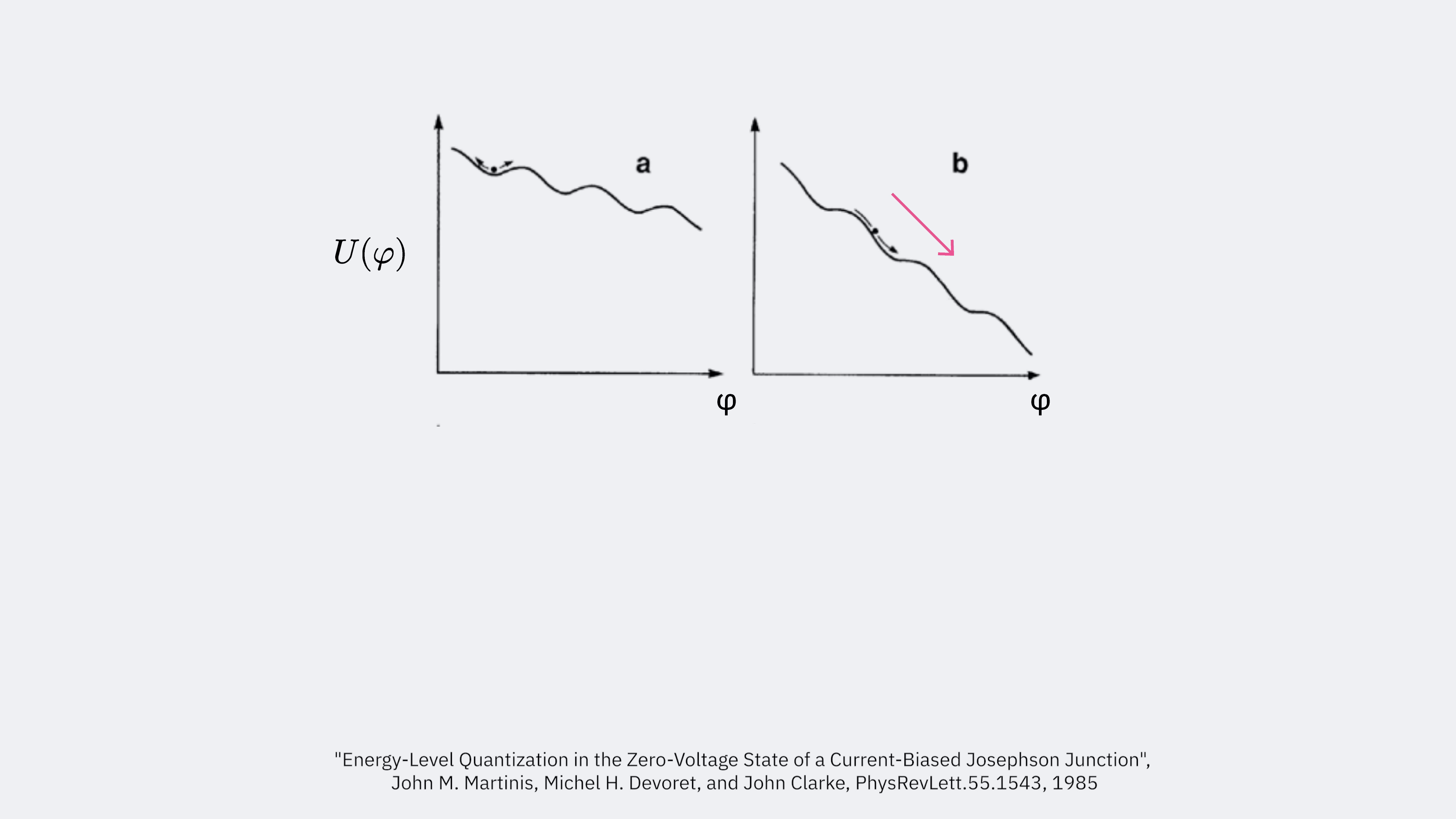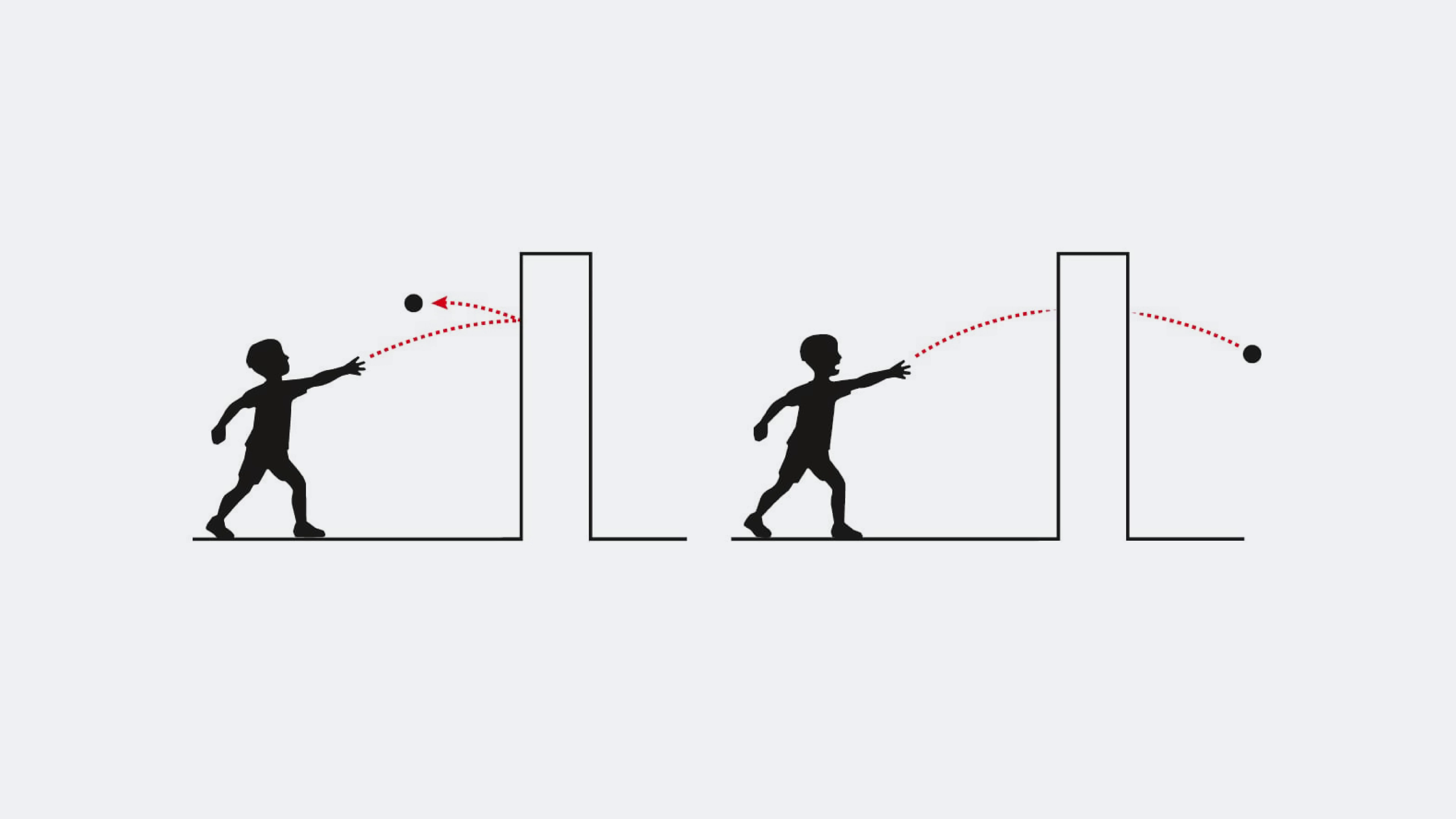At zero temperature and current below the critical current, classical physics says that the system should be stuck in that valley. But quantum mechanics says it can tunnel out of the valley. And because it is the phase of all the Cooper pairs that's changing in this tunneling, that's macroscopic quantum tunneling.